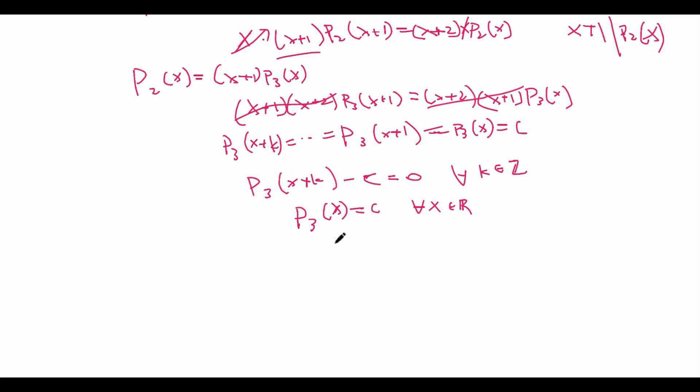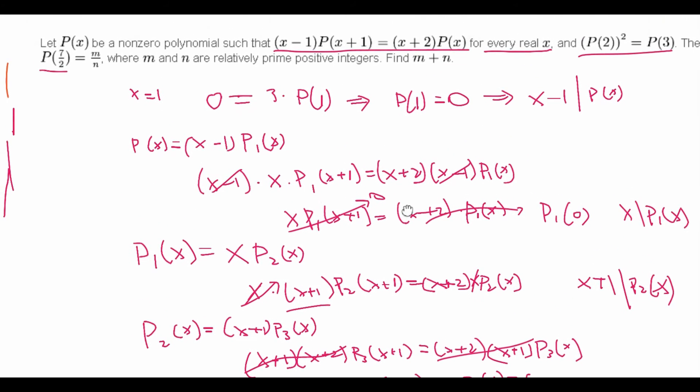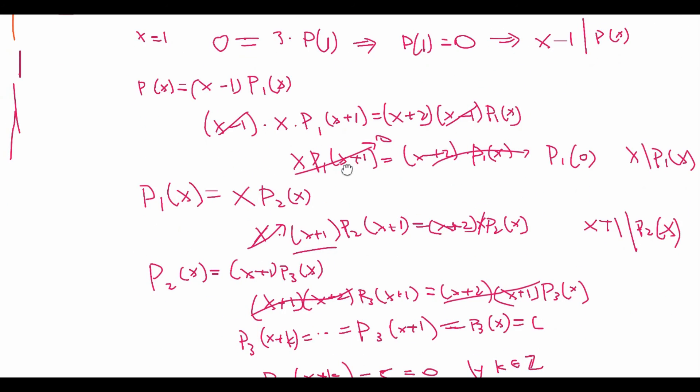So now we know that P₃(x) is equal to c. Well, back substituting we get P₂(x) is equal to c times (x+1). P₁(x) is equal to c times (x+1) times x. And then P(x), finally, is equal to c times (x+1) times x times (x-1). So now we actually have an explicit formula for P(x), given this condition. This condition tells us that P(x) must equal c times (x+1) times x times (x-1) for some c.